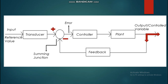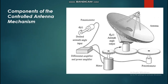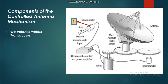For more details on this configuration, click the link in the top right corner where we discuss it fully. Now let's look at the components of the antenna control mechanism. The major components include two potentiometers, both acting as transducers. The first potentiometer is our input transducer, which converts the set position or desired angle into a form that can be understood by the controller.